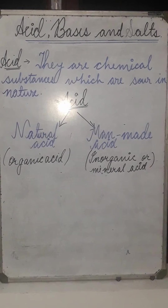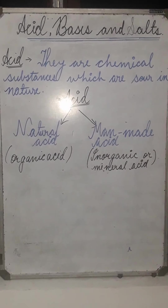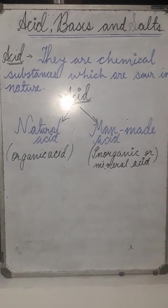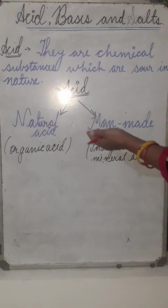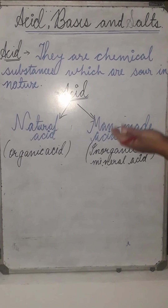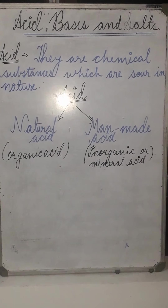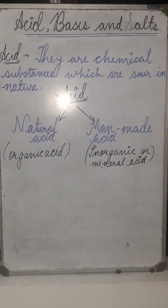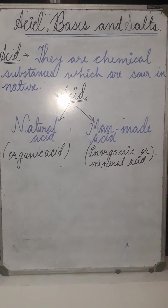We can also classify acids on the basis of concentrated and dilute acids. Concentrated acid means the acid in which the amount of water is less, and dilute acid means the amount of water is more. So all acids are sour in taste. In this slide we have studied about acids, and in our next slide we will study about properties of acids. Thank you.